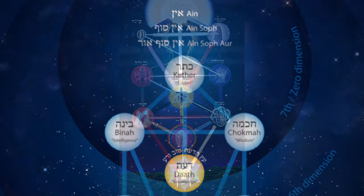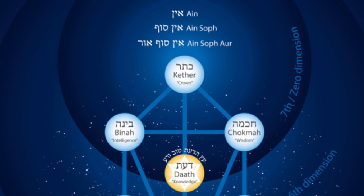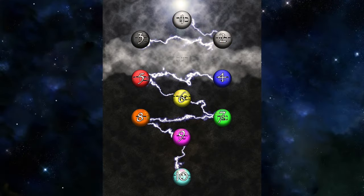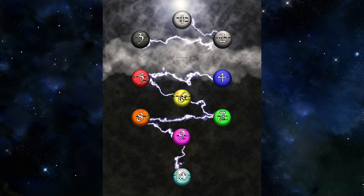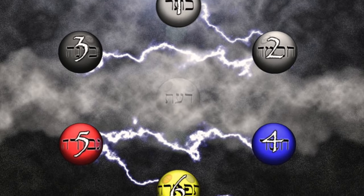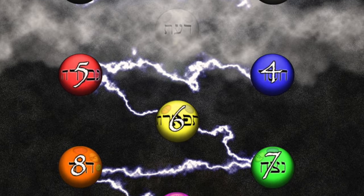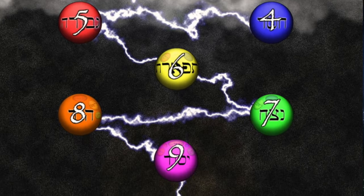Keter is Sephirot number one, at the top. The order goes in a lightning bolt pattern: starting at the top, then to the right, then to the left, back to the right, back to the left. So number one is Keter, number two is Hokmah on the right at the top of the Pillar of Mercy, number three is Binah at the top of the Pillar of Severity. Number four is Hesed in the middle of the Pillar of Mercy, and to the left of Hesed is Geburah — number five — at the middle of the Pillar of Severity. Number six is Tiferet, right on the middle pillar.